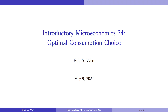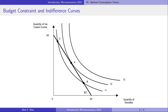Today we will find the consumer's optimal consumption choice to maximise her utility subject to her budget constraint. We use the consumer's budget line for noodles and ice cream cones. Her income is $100 per day. The price of noodles is $5 per bowl. The price of ice cream is $2 per cone. Keep in mind that the consumer fully uses her income for the consumption bundles on the budget line. She cannot afford the bundles outside it, and has not used all her income for bundles inside it.